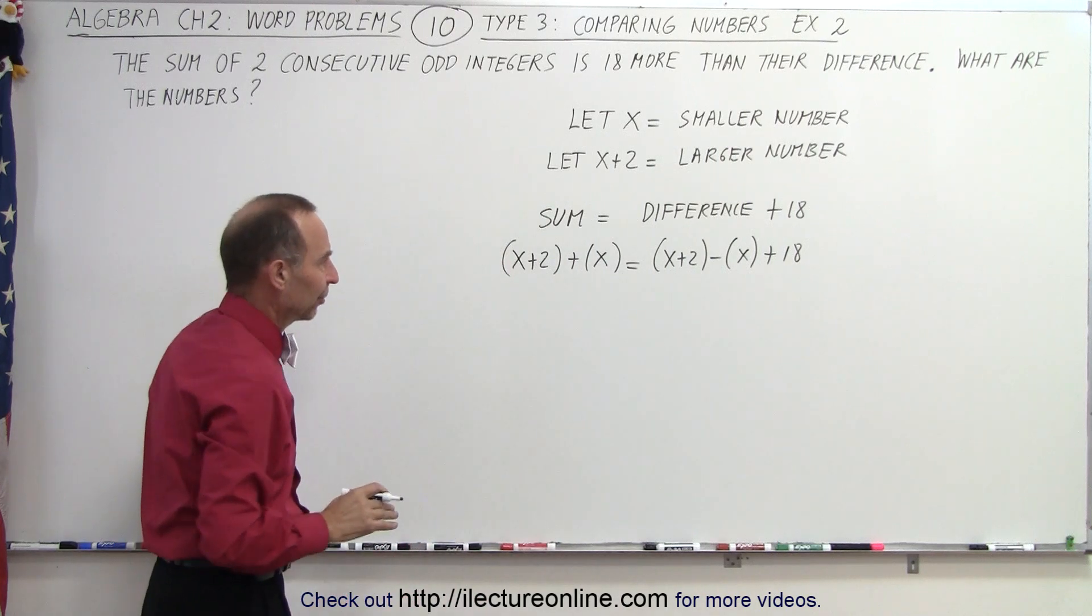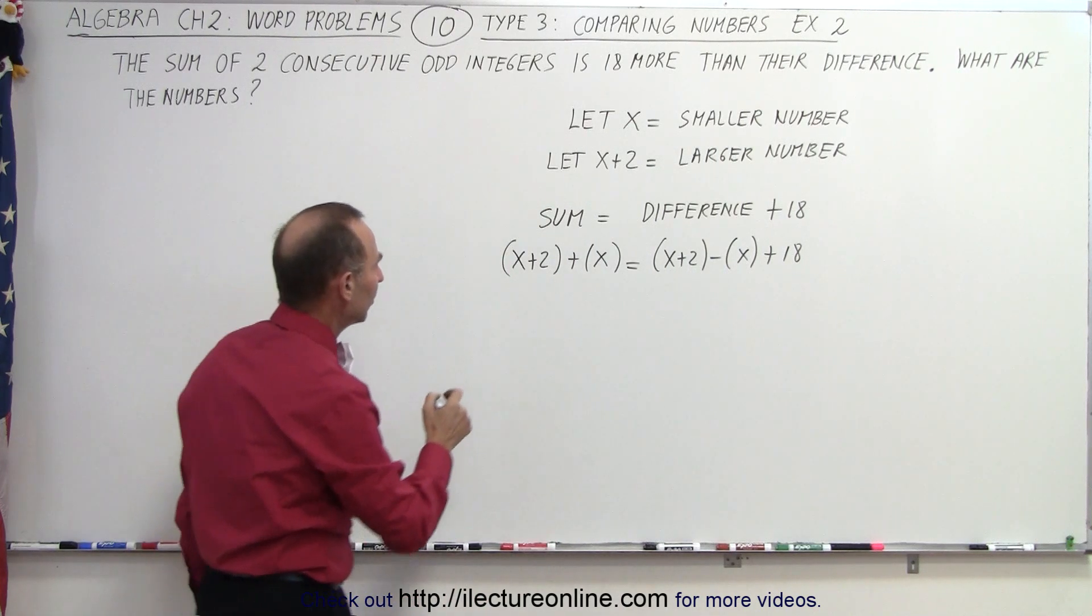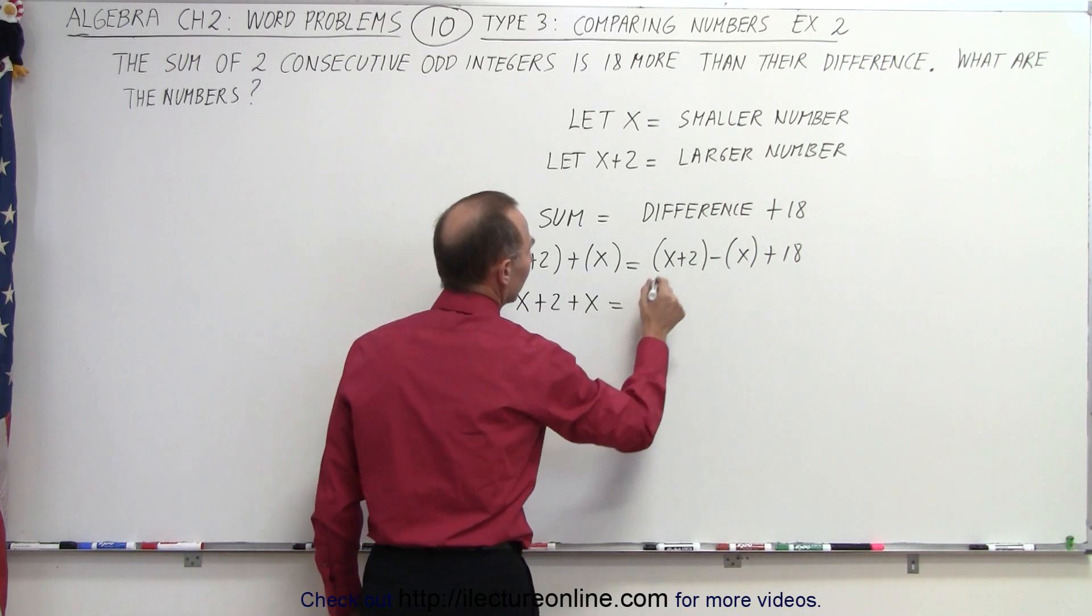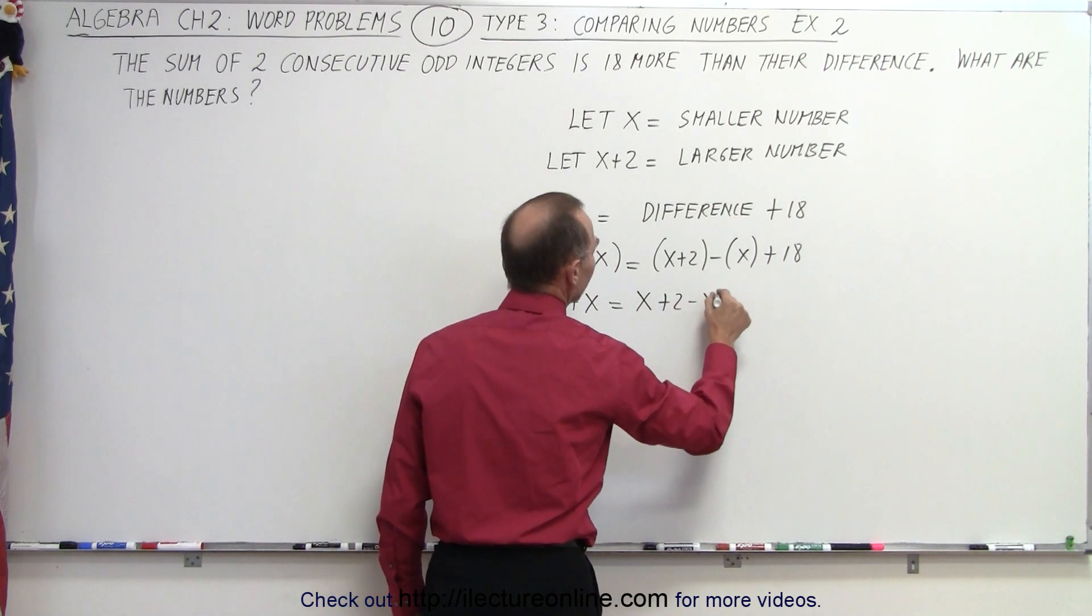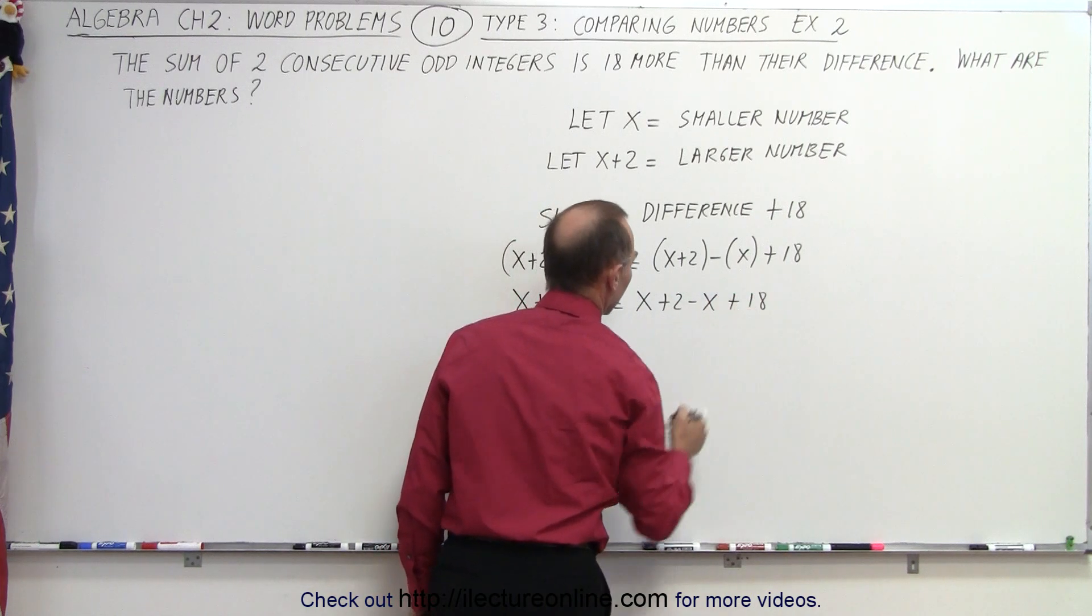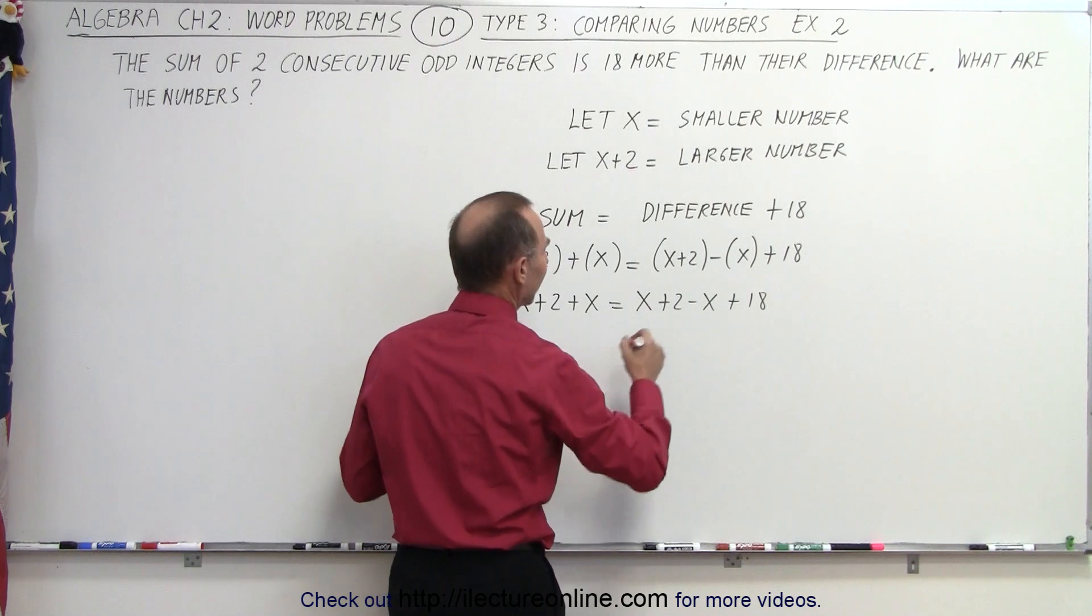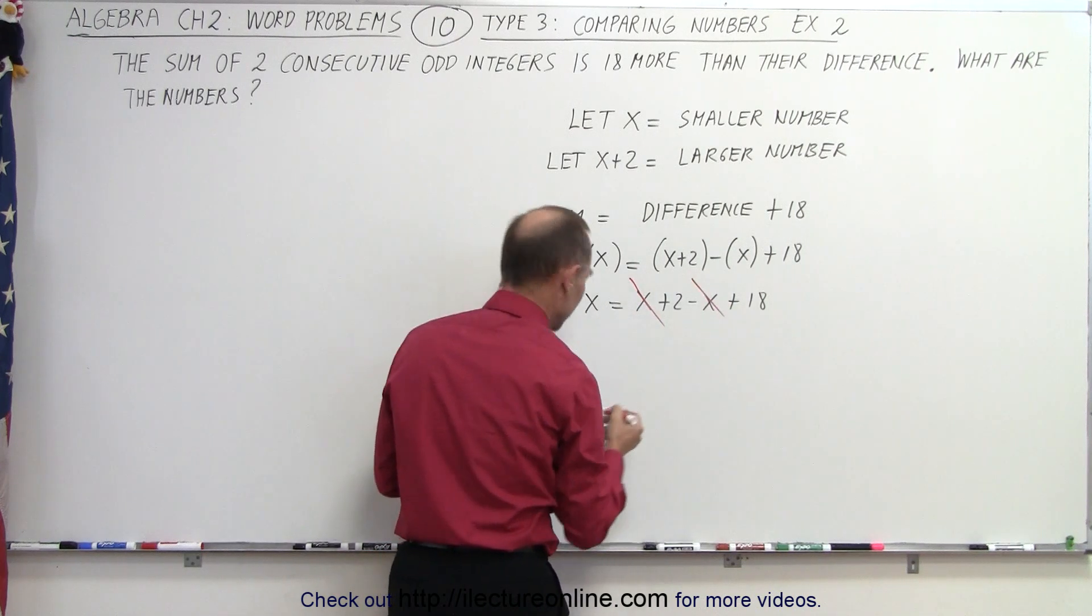Now we can solve this for x. We first want to get rid of the parentheses. So we end up with x plus 2 plus x is equal to x plus 2 minus x plus 18. The first thing we can see here is that we have an x minus x on the right side. So we can simply eliminate those two.